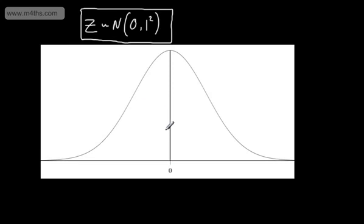Normal distributions can model many situations, such as volume, height, weight, and so on, and in general they will have a mean of mu and a variance of sigma squared. One other key feature of this graph is that the area trapped under the curve is equal to 1, which allows us to use the function to find probabilities.